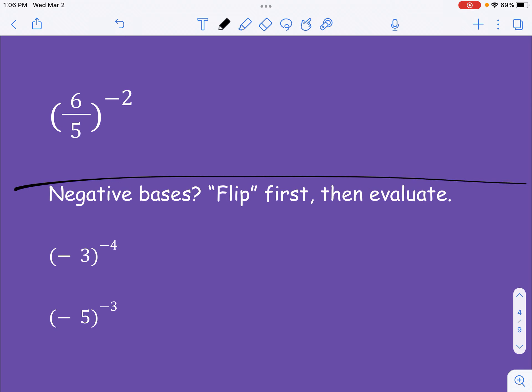So we have 6 5ths and a negative 2. So if you haven't tried already, pause the video, and then try this problem, and then come back and watch me do it. Okay, so we're going to start by flipping it, turning it into 5 6ths squared. So another way of writing this is 5 6ths times 5 6ths. So you get 25 36ths, and that is simplified, and you're in good shape.